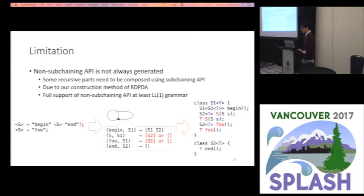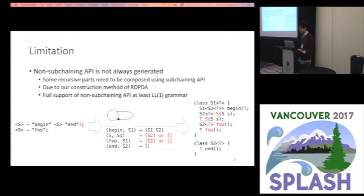In SilverChain, non-subchaining API is not always generated everywhere — some recursive parts need to be composed using subchaining API. This limitation is due to our construction method of RDPDA. SilverChain assumes that every recursive rule has an explicit begin call or end call. For example, in a case where the end call is optional in the grammar, SilverChain cannot construct the RDPDA correctly, and this part needs to be written using the subchaining API.